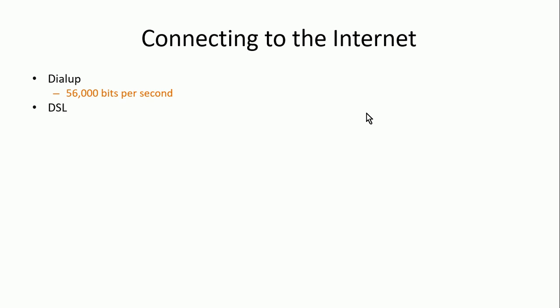Another technology based on telephone lines that came out a little later was DSL — Digital Subscriber Lines. They used tricks to get faster speed out of telephone lines, using digital telephone lines and different channels to expand the range. With DSL you could get about 256,000 bits per second. DSL is still around; Verizon in our area still offers it in certain areas, but not globally anymore because better technologies are available.